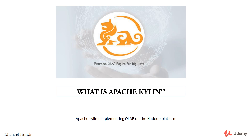Apache Kylin is an open-source distributed analytics engine designed to support extremely large data sets by providing a SQL interface for multi-dimensional analysis for big data in Hadoop. It was originally contributed to the Apache Foundation by eBay in 2014.